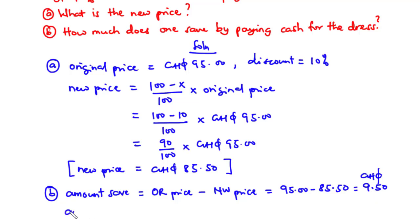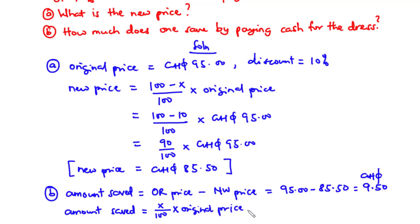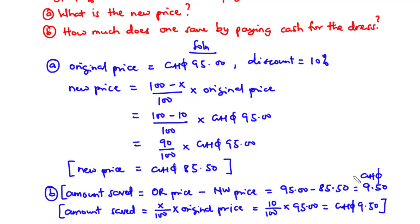For the second approach, the amount saved equals x over 100 times the original price — that is 10 divided by 100 times 95 — which also equals 9 Ghana cedis 50 pesewas. Whichever way you solve it, you arrive at the same answer. That's it for today's video. Thanks for watching and see you in the next video, bye-bye.